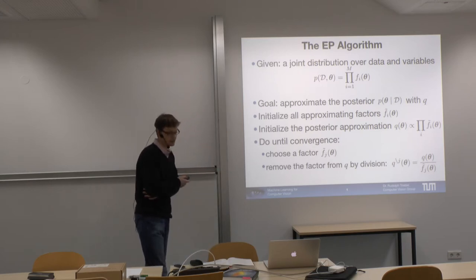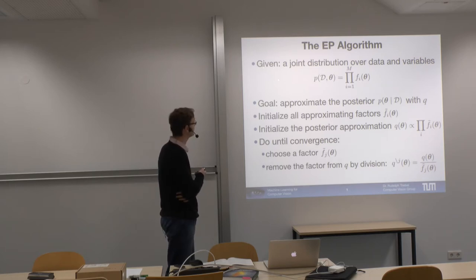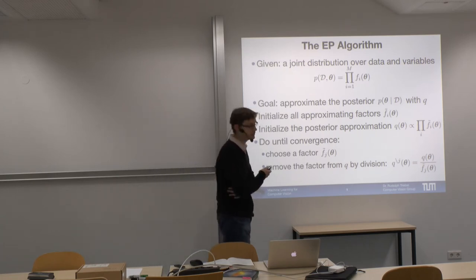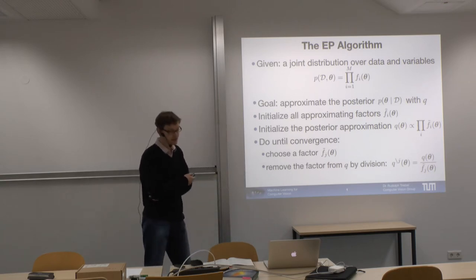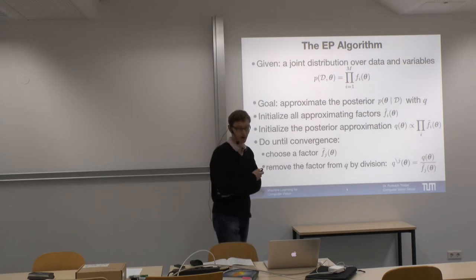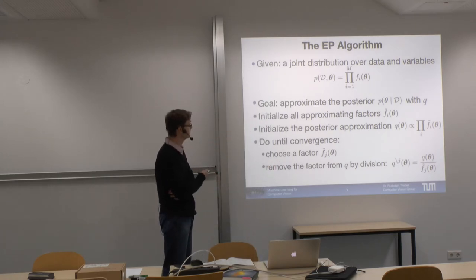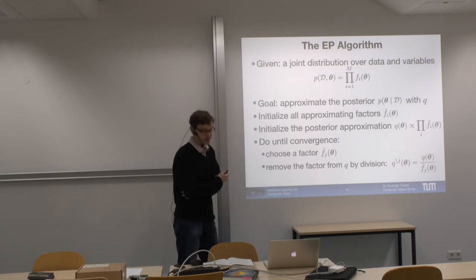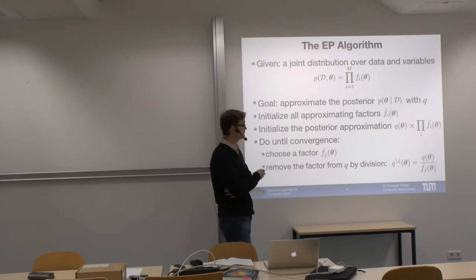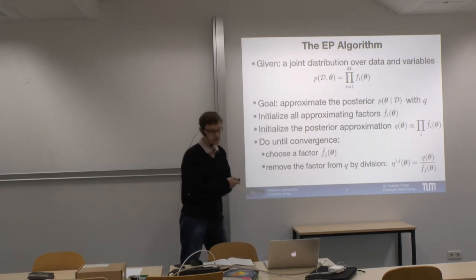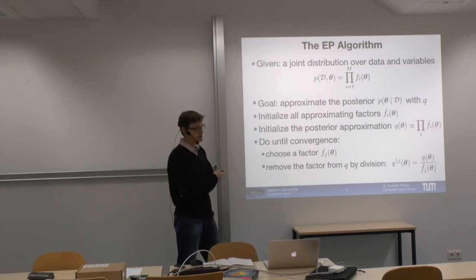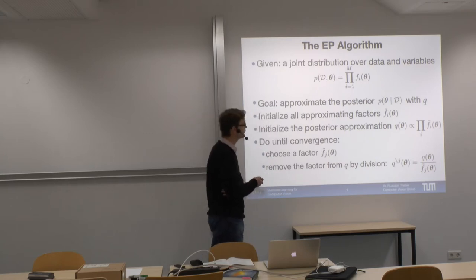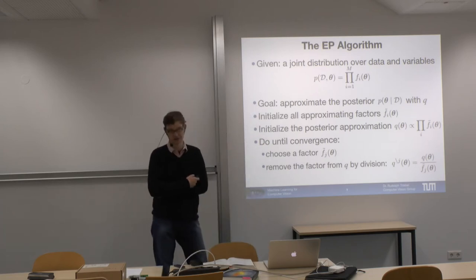The problem definition of the algorithm is given here. We assume we have a joint distribution over some data and variables. The problem is that we cannot represent that distribution — it's intractable. We cannot directly optimize this or the posterior. What we actually want is the posterior, the probability of the parameters given the data. To solve this, instead of optimizing the posterior directly, we try to approximate it with some other distribution Q, with a simple distribution. We assume Q is a factorization of factors from the exponential family.